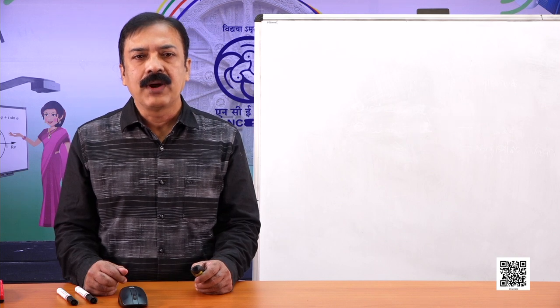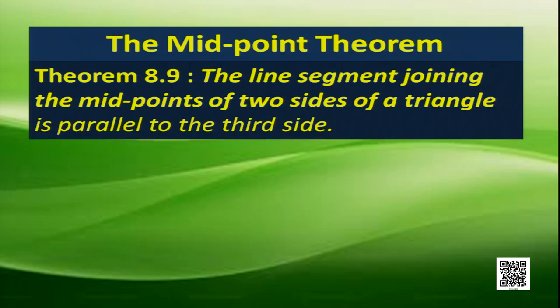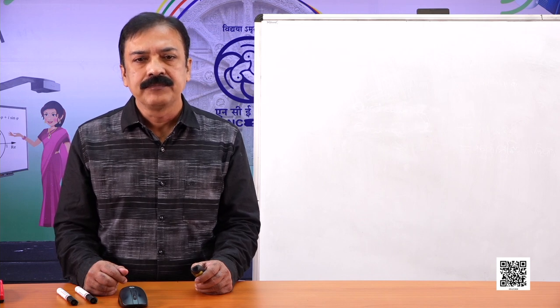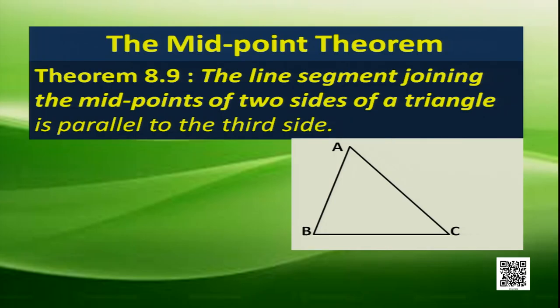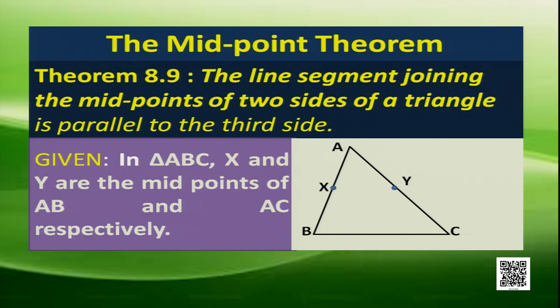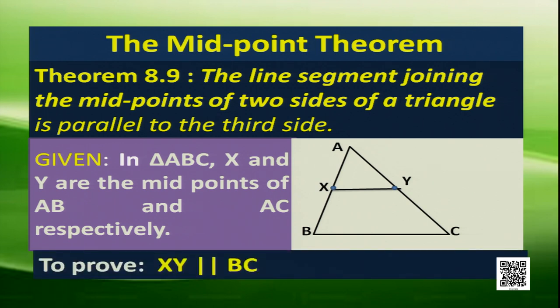Let's see what the Midpoint Theorem states: the line segment joining the midpoints of two sides of a triangle is parallel to the third side. Let's visualize this with a figure. Here ABC is a triangle, and X and Y are the midpoints of sides AB and AC respectively. We join the points X and Y, and we need to prove that XY is parallel to BC.